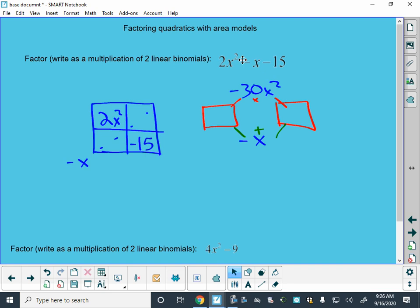Okay, well, what numbers do I multiply together to get negative 30, and I add them to get negative 1? Sounds like a negative 6x and a positive 5x will do the job. And so I'm going to transfer those over into my boxes, and it doesn't matter which box I put them in.